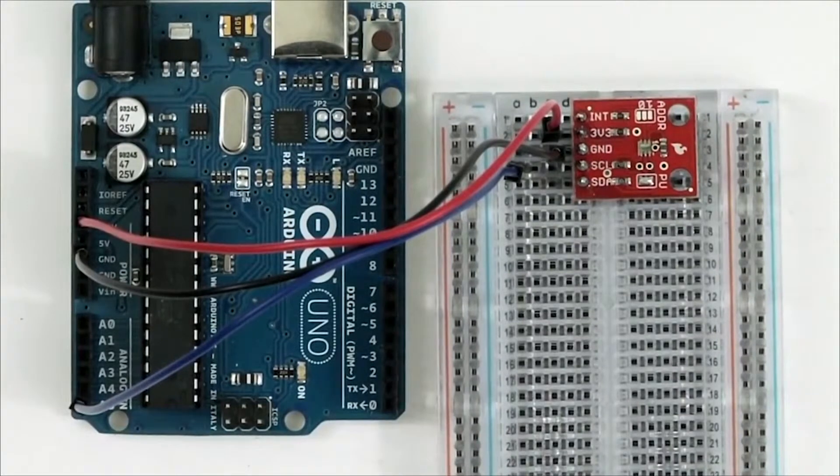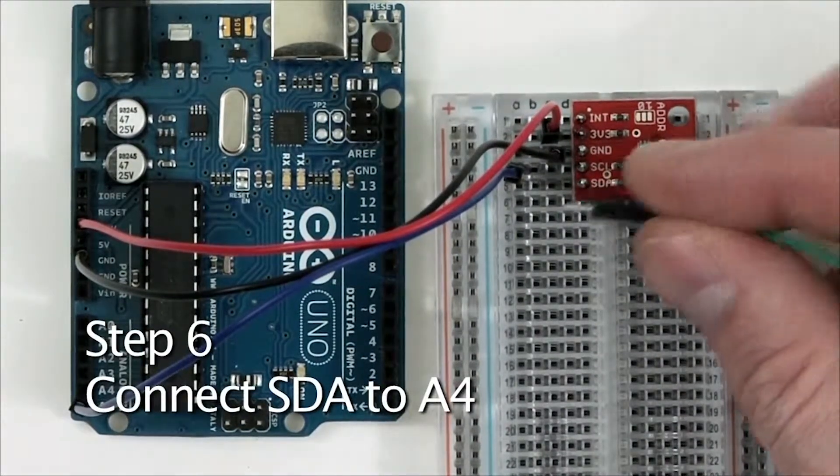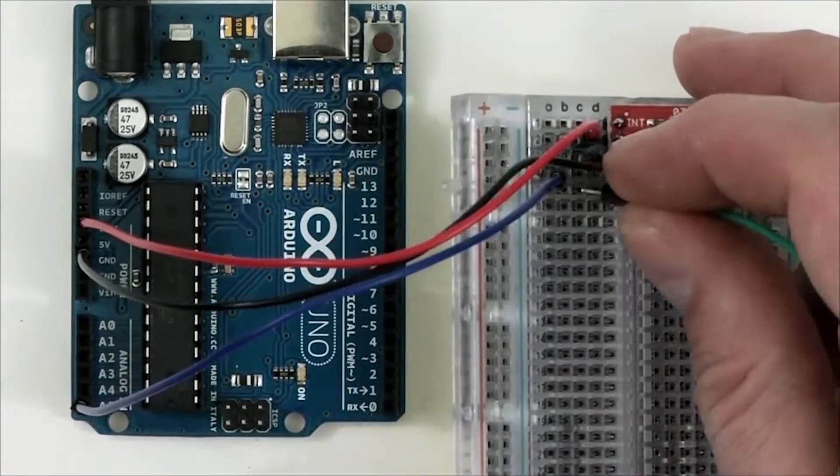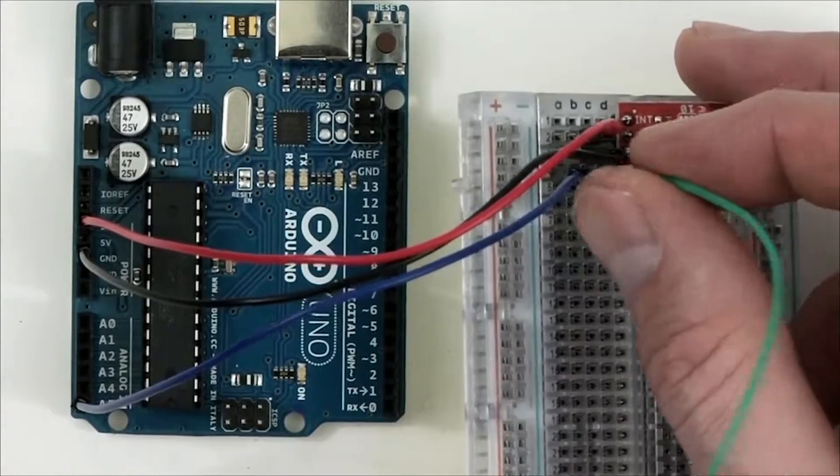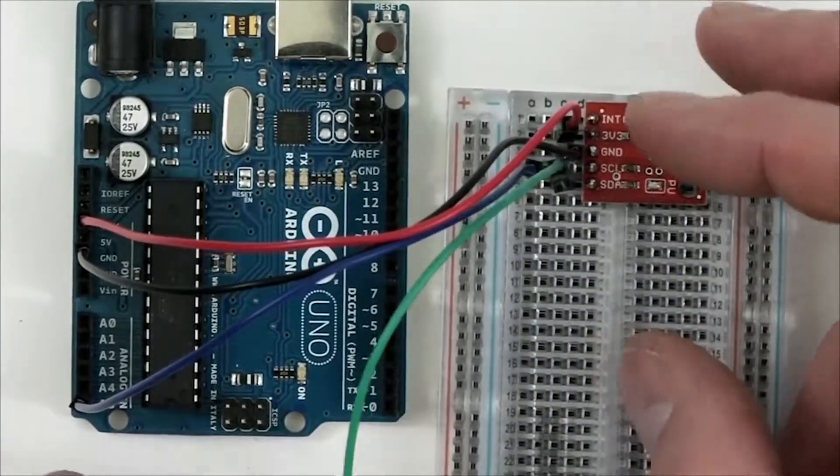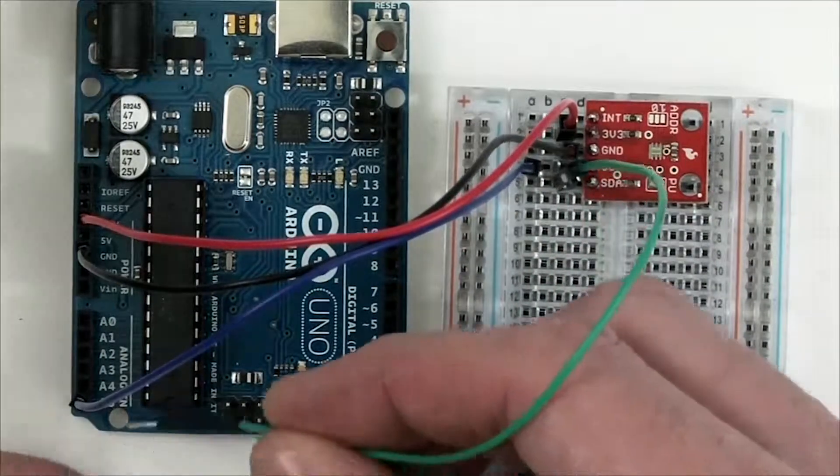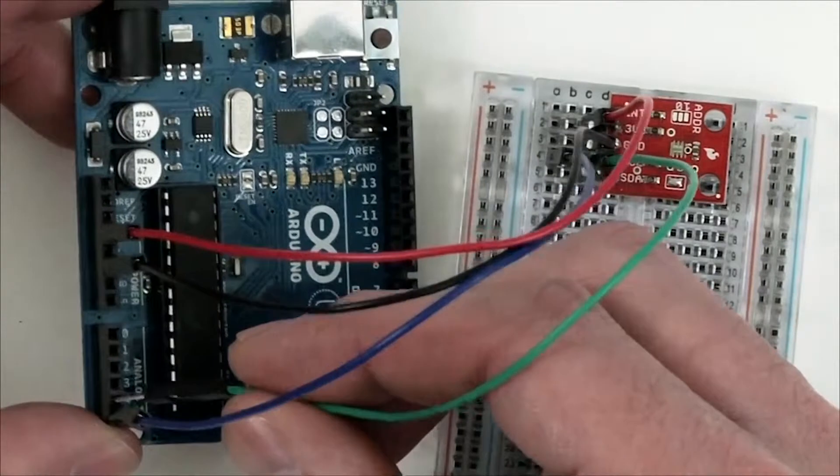Next, take another jumper wire, plug it into row five which connects to the SDA pin. Then take the other end of the jumper wire and plug it into analog four or A4 on the Arduino.